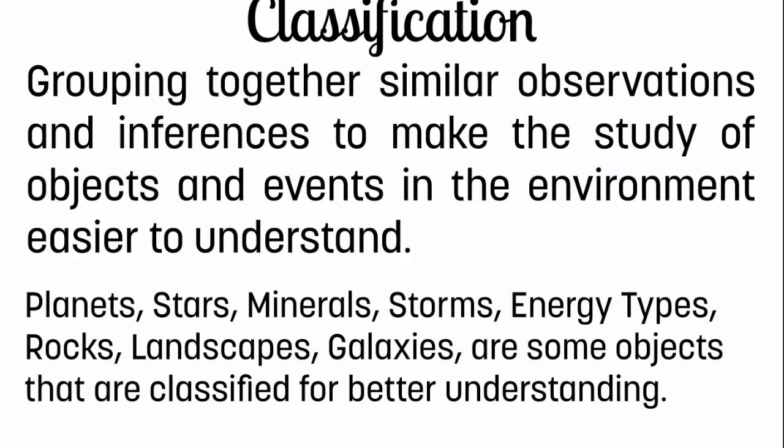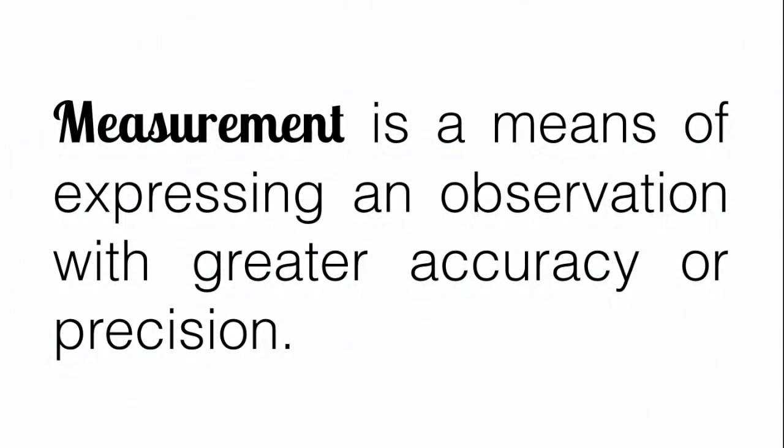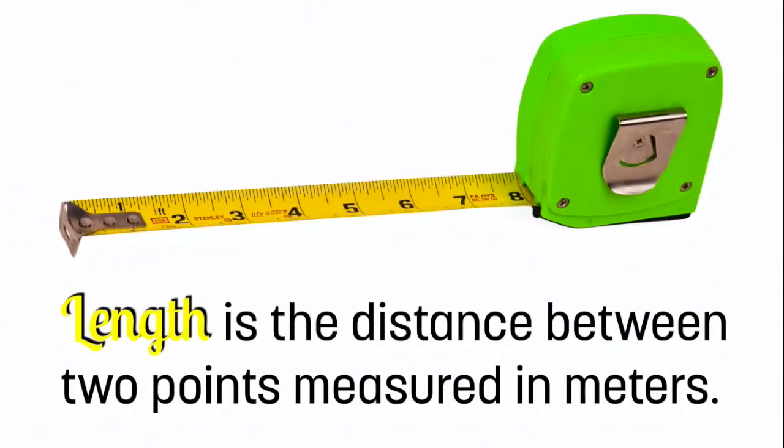Of course, in science we have to measure. It's another science skill, it's kind of an umbrella term. When we measure, it's a means of expressing an observation with greater accuracy or precision. When we measure, we have to measure accurately, but it's a way of communicating an observation to other people.